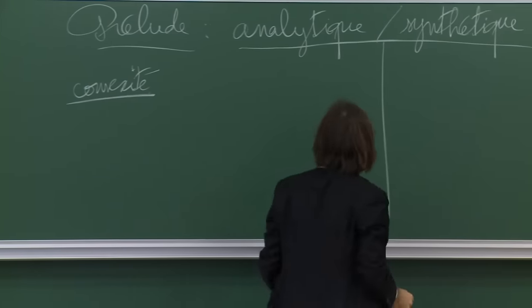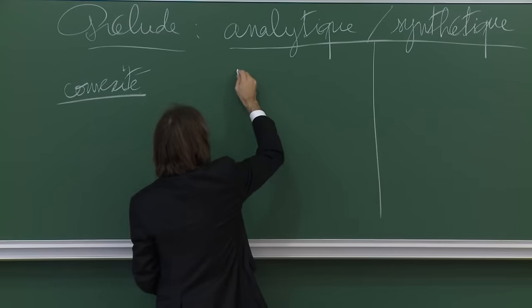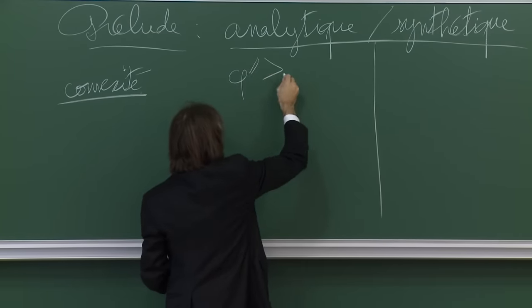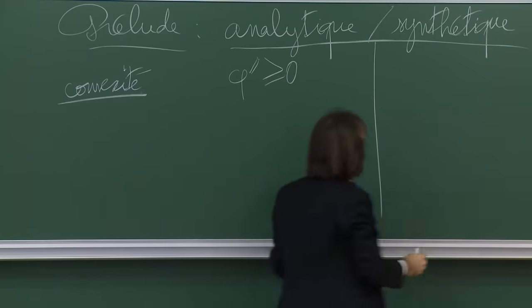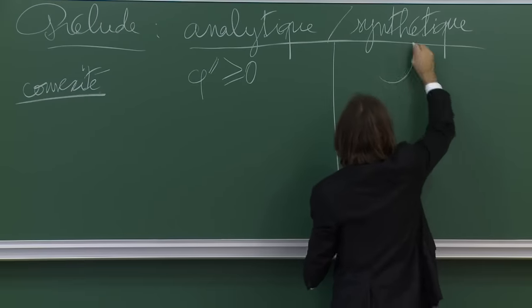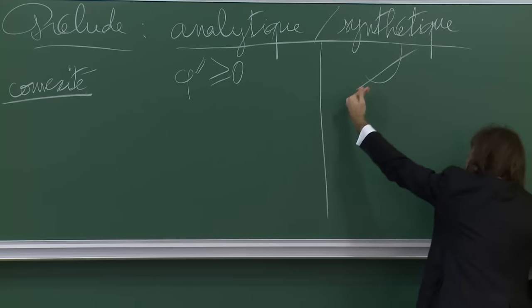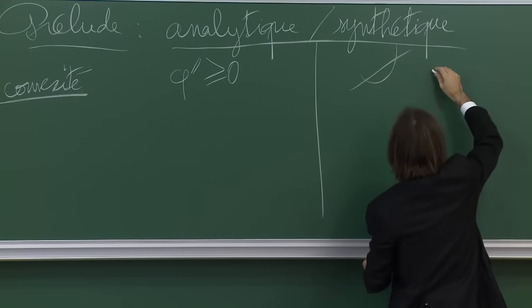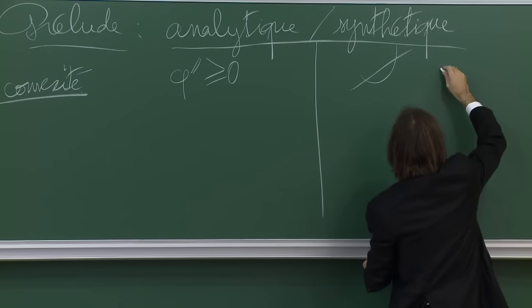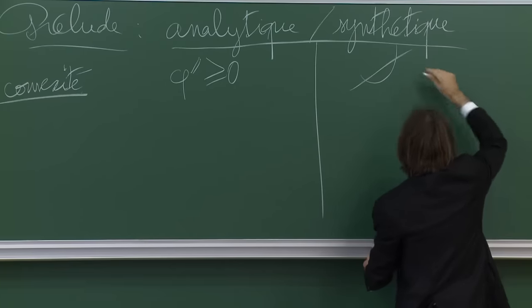On va dire que quand on a des calculs, on appellera ça analytique ; quand on a des propriétés, on appellera ça synthétique. On va donner quelques exemples. On commence avec l'exemple à garder en tête : la convexité. Comment on définit qu'une fonction est convexe ? La façon la plus populaire, c'est de dire qu'une fonction est convexe si sa dérivée seconde est positive. L'autre : la fonction est convexe si le graphe est toujours au-dessus de la tangente et en dessous de la corde.